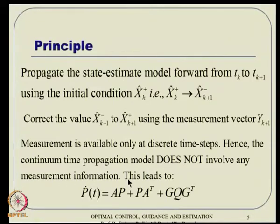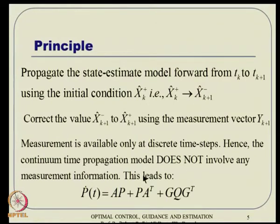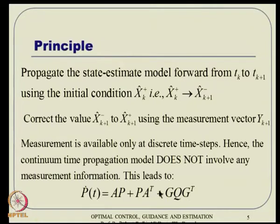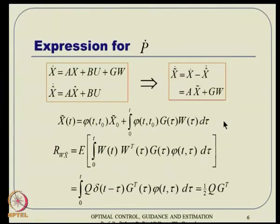In the previous lecture there was some measurement information involved, but now in the continuous-discrete case it does not appear in the propagation. So P-dot takes a relatively simpler expression. The expression for P-dot is something we need to derive, and we have x-dot in this form because noise cannot be taken into the propagation equation - we drop the noise term while operating in prediction mode.